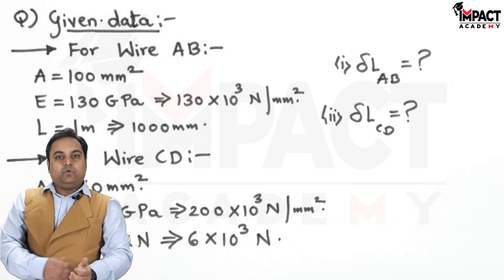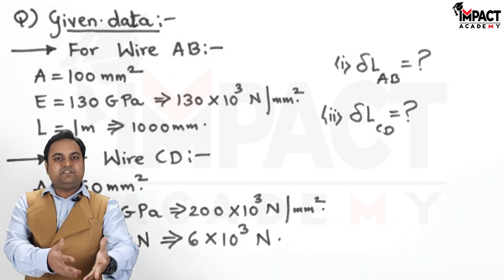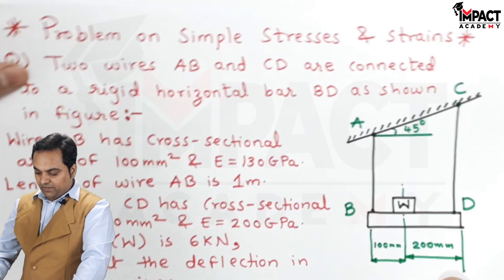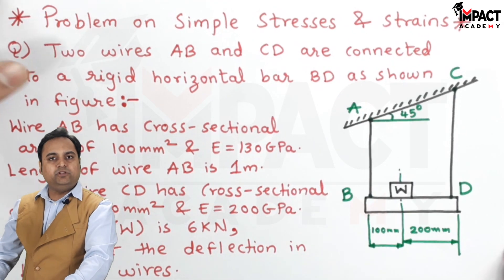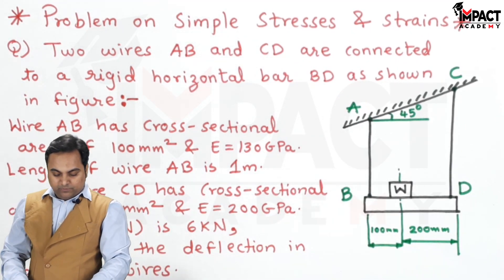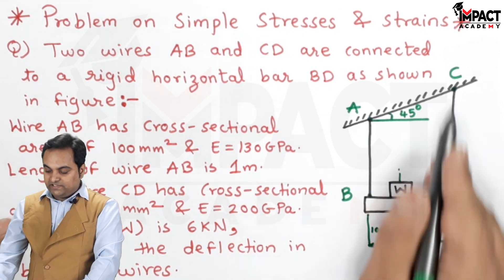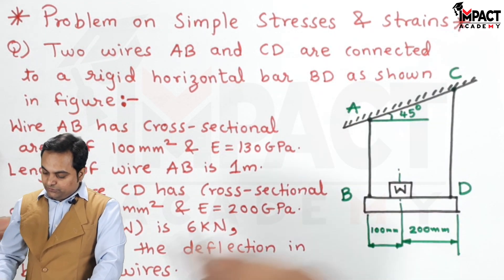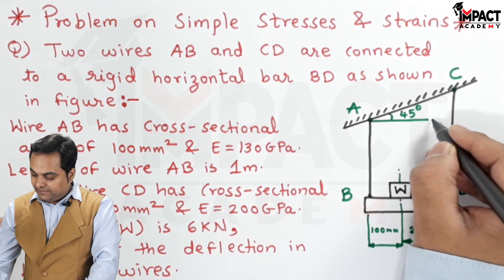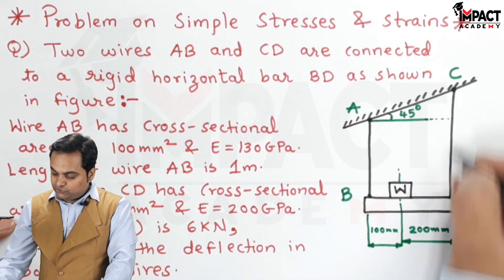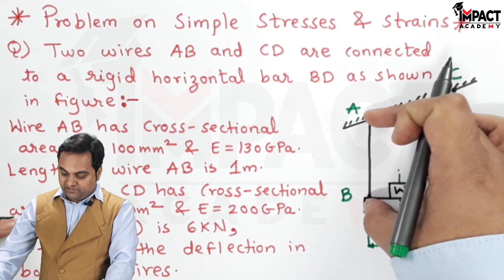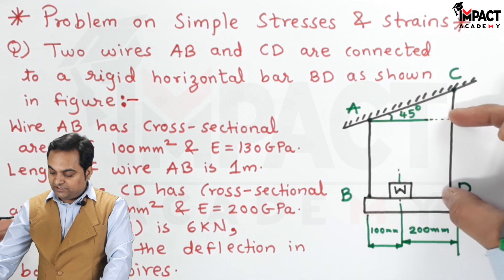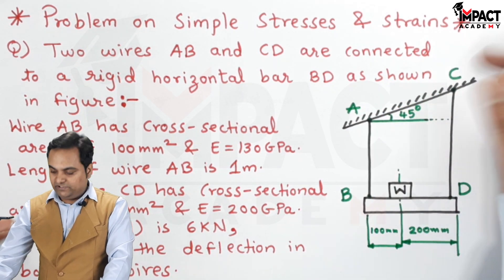Now, this is the question in front of us. So let us get started with the solution part. Into the solution, we need to have the length of both the wires. In the problem, they have only given the length of wire AB. Wire CD, its length is not known to us. So when I look into this figure, when I am extending this horizontal line up to CD, we can say that AB is given as 1 meter.